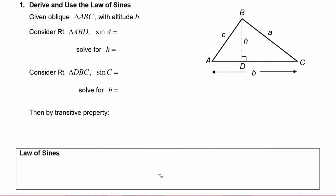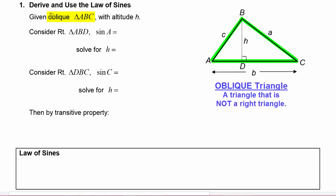Let's start off with oblique triangle ABC. If you're unfamiliar with the word oblique, an oblique triangle is simply a triangle that is not a right triangle. Triangles either are right triangles or they are oblique triangles, meaning not right triangles.